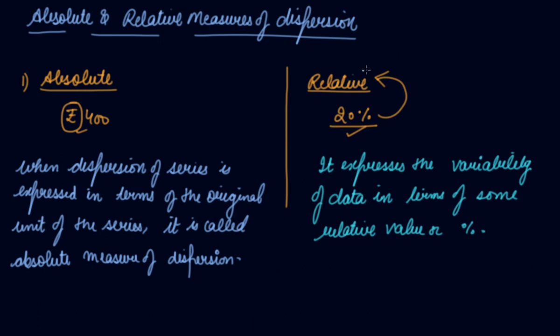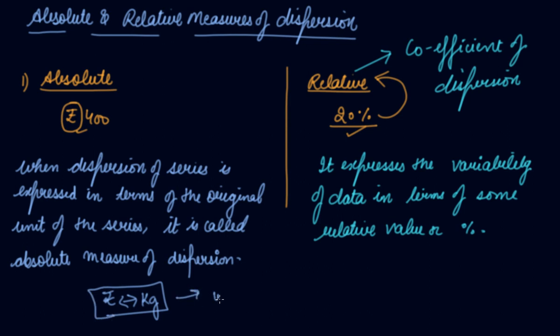So your relative measure of dispersion is also known as coefficient of dispersion. So you are comparing two series. Whenever you need to compare two series, the series might be in rupees, the other series might be in kgs. So you want to compare both series. The units are different. So you need to convert them into the relative measure, that is into percentages or some other relative measure in order to compare it.